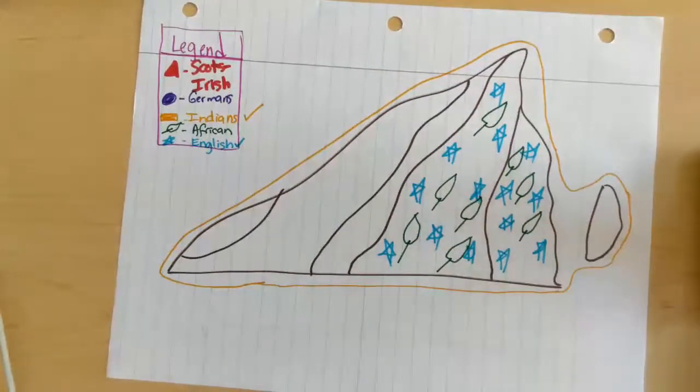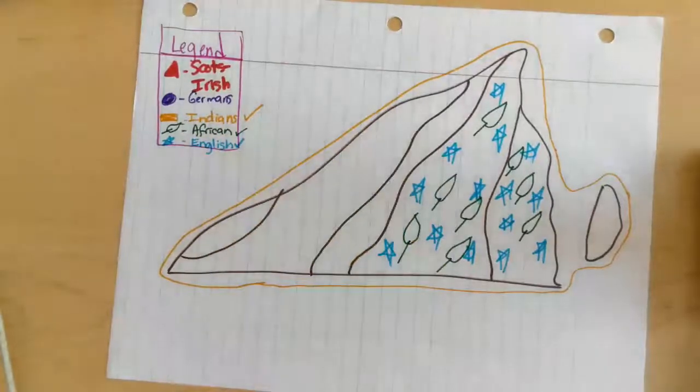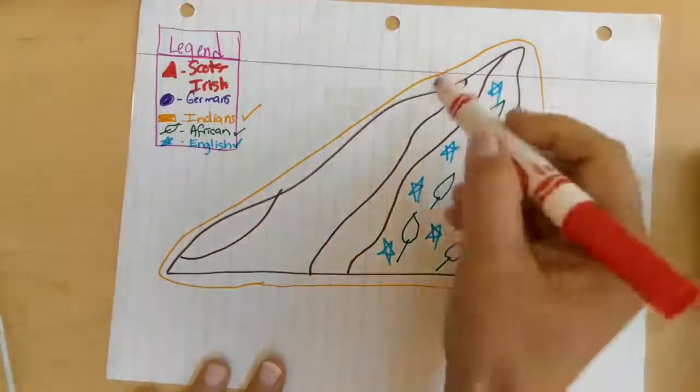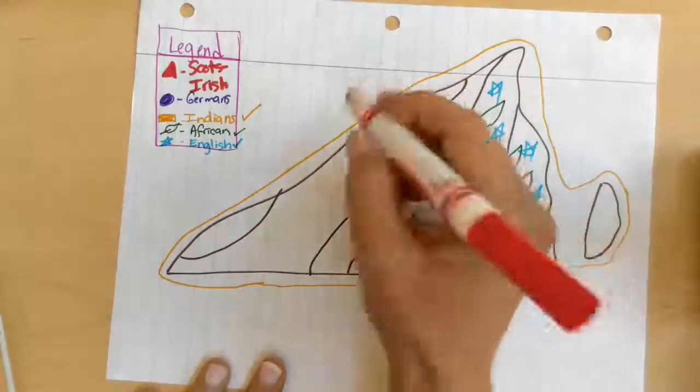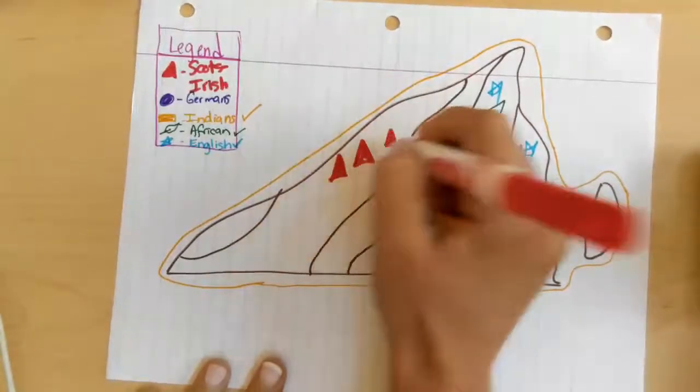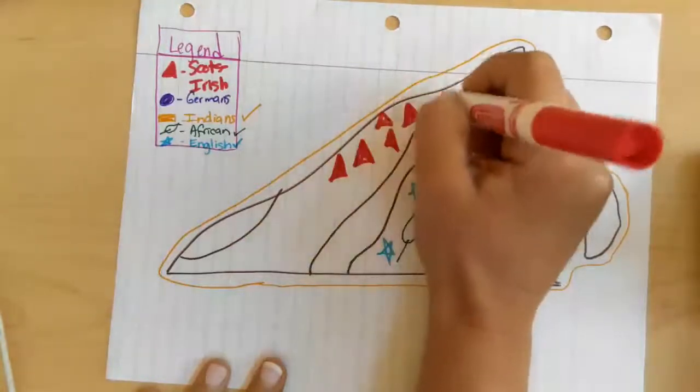All right, now we're going to put a check beside the African culture. So the next group was the Germans and the Scots-Irish. So the Scots-Irish, and if you remember, they are in the Shenandoah Valley up here. They are represented with red triangles, and again, these do not have to be perfect.